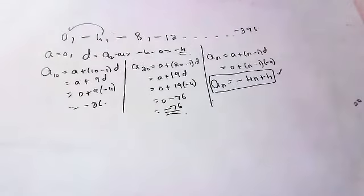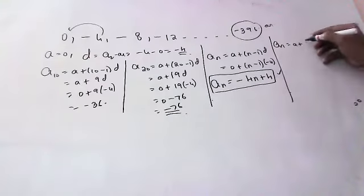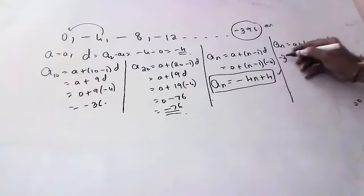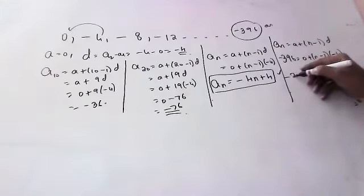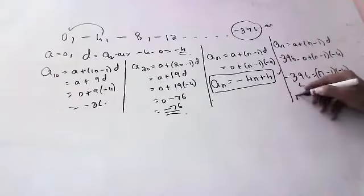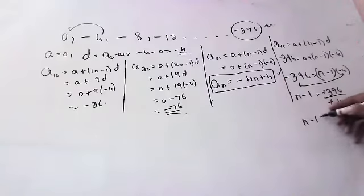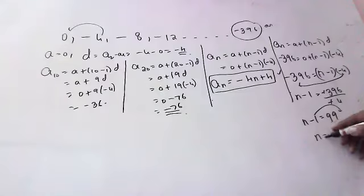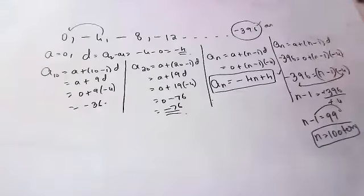To find the number of terms, the last term aₙ is −396. So: −396 = 0 + (n−1) × (−4). This gives (n−1) = −396 ÷ (−4) = 99, so n = 100. There are 100 terms in this sequence, and the 100th term is −396.